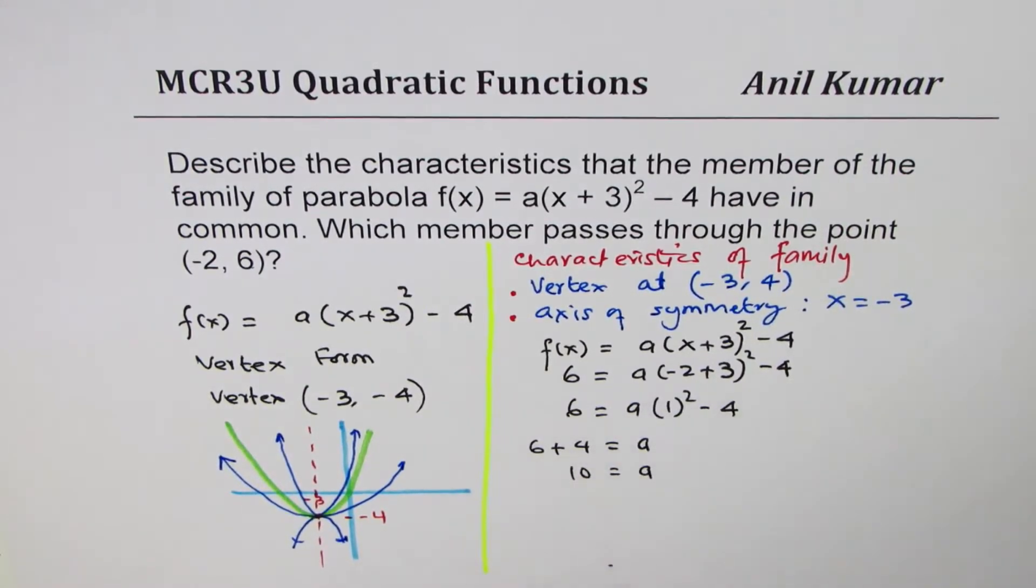So a = 10. So the function which goes through this point will be for a = 10. So it becomes 10(x + 3)² - 4.